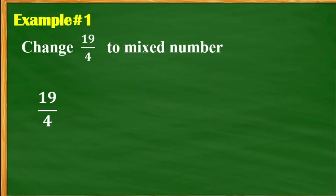Let's have an example to further analyze how to change improper fraction to mixed number. When we say improper fraction, the numerator is greater than the denominator. And when we say proper fraction, the numerator is less than the denominator. And when we say mixed number, it involves a whole number. So this would be an example of an improper fraction.